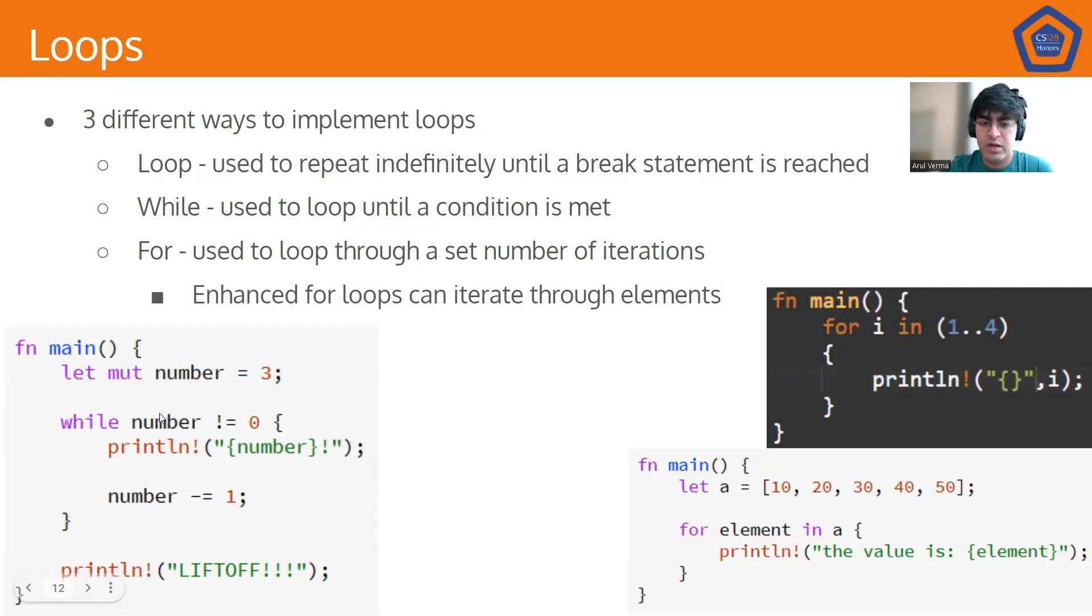The thing with while loops is that you can often unintentionally create an infinite while loop. If we remove number minus equals 1, this code will iterate forever trying to get number equal to 0, but it never will. In for loops, we can see an example of an enhanced for loop on the array, which is for i in 1 dot dot 4. This is the way you declare a range of iterations you want to go through. Left side is inclusive, the right side is non-inclusive. So this would go 1, 2, 3, and then it would quit.